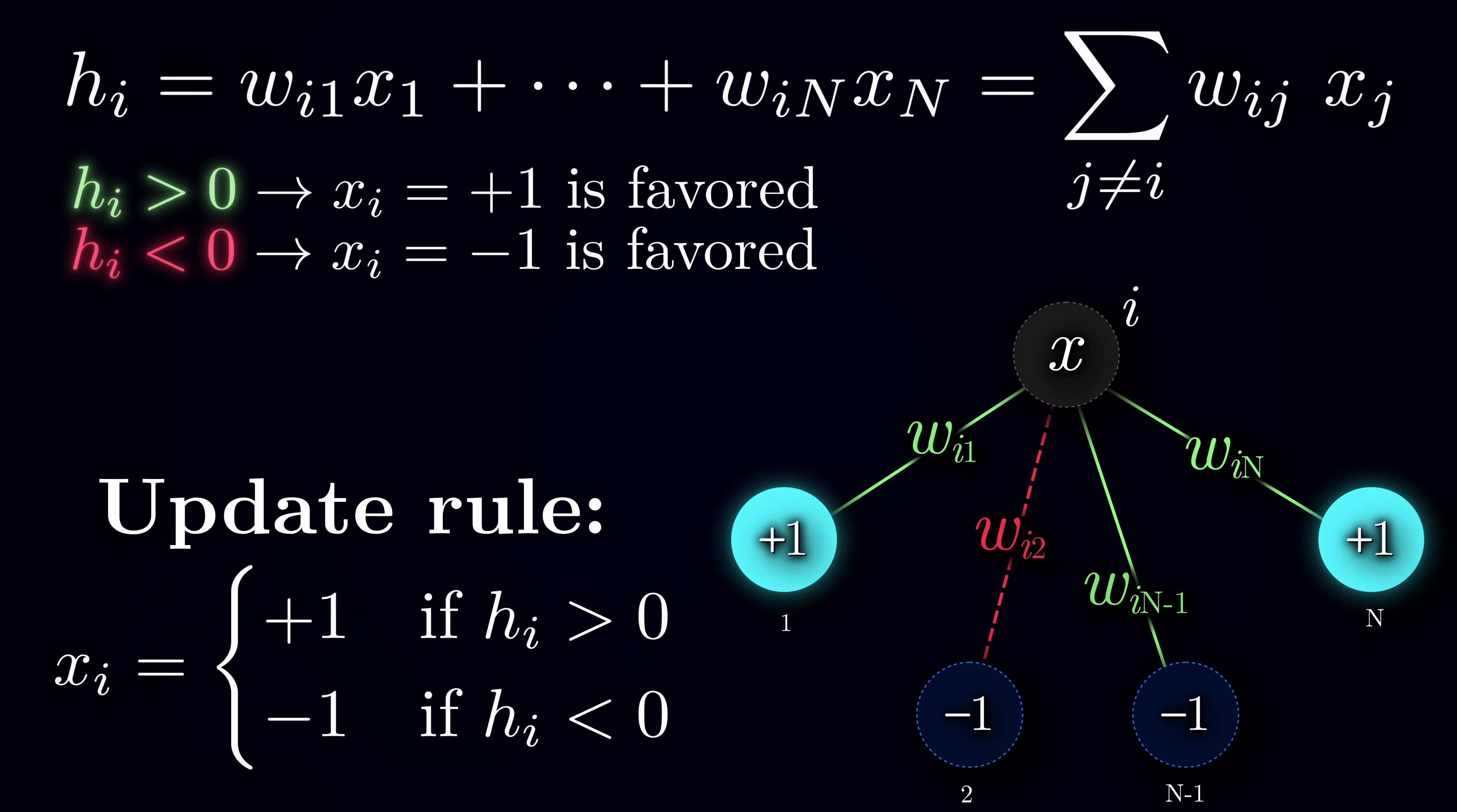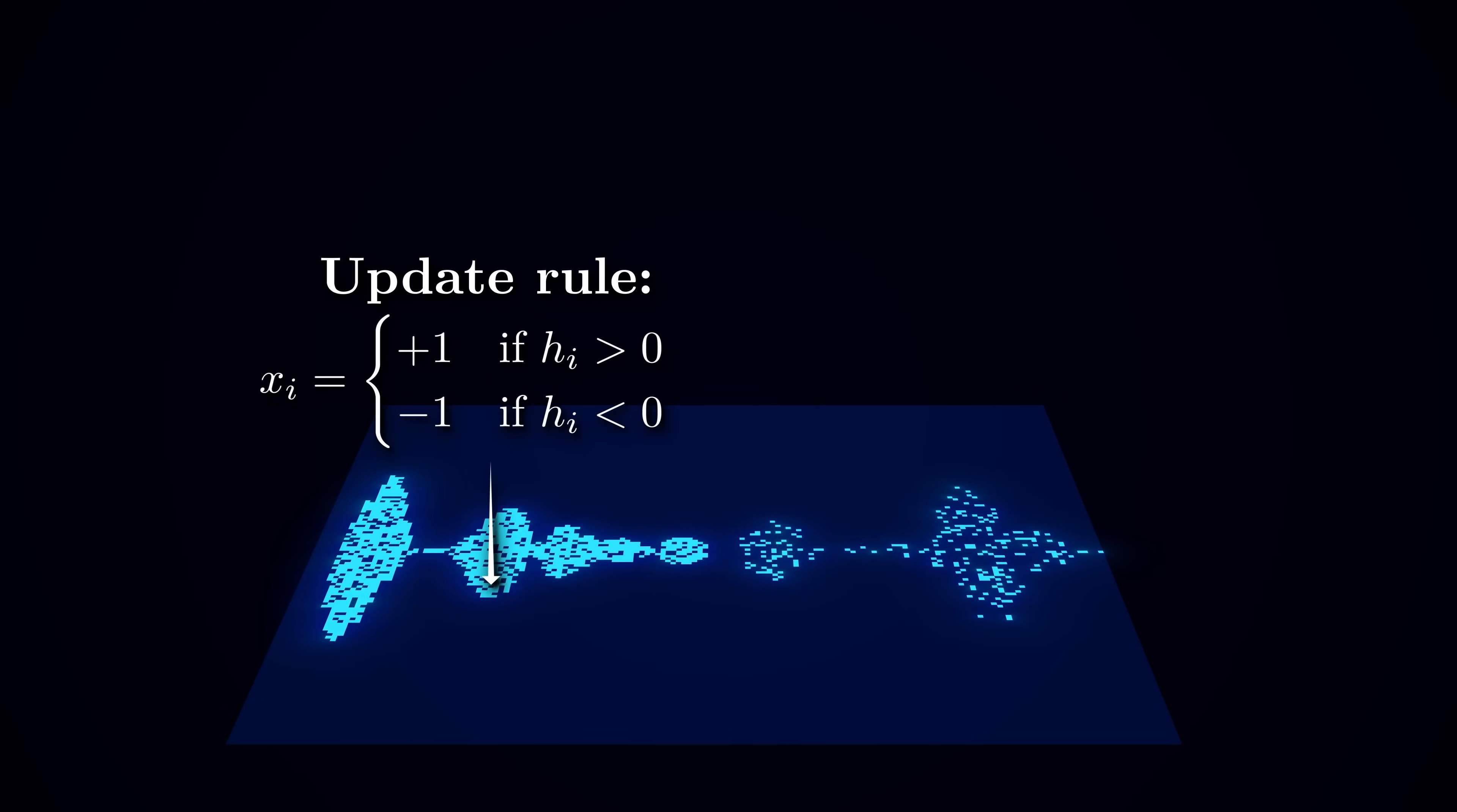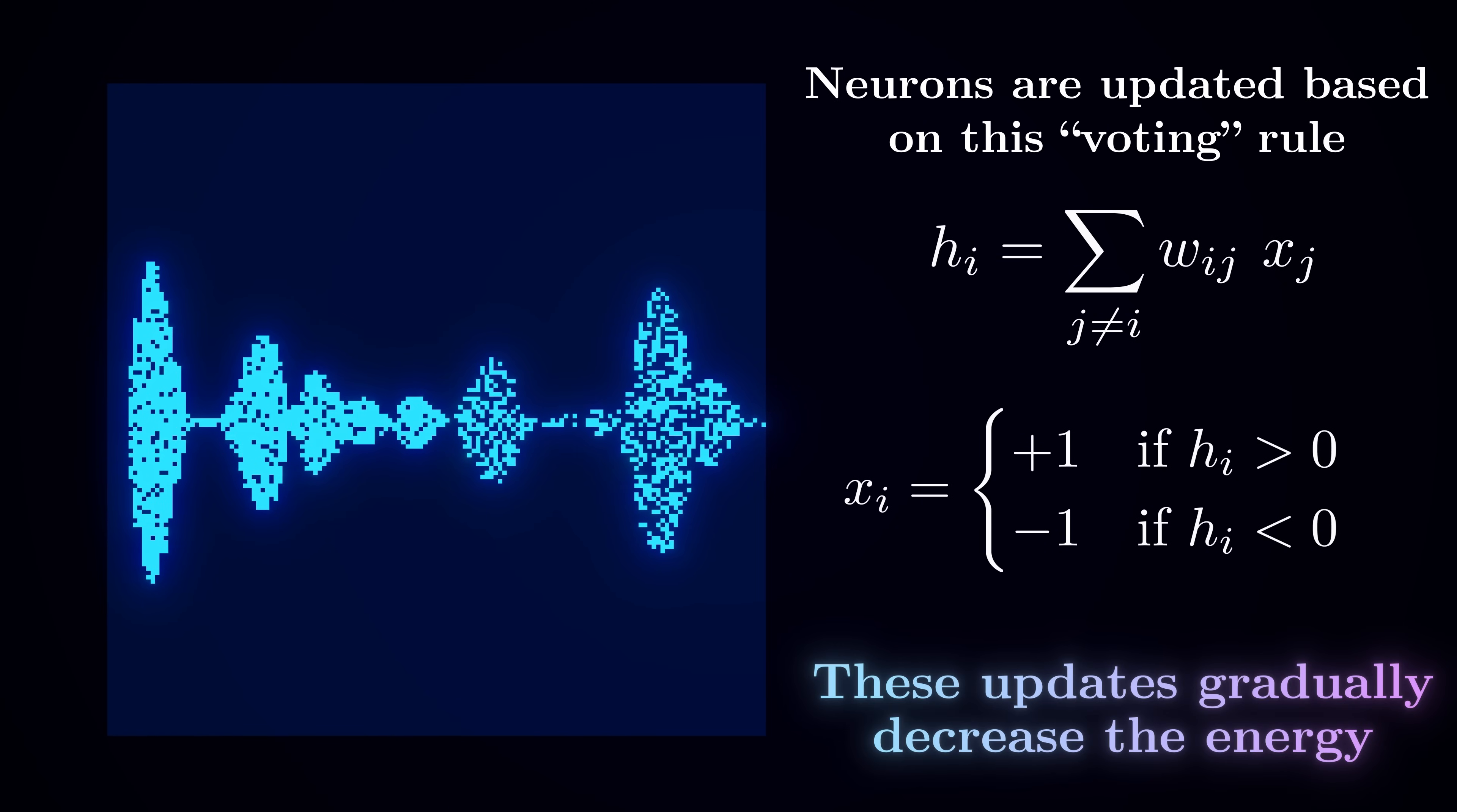You can think of this as a kind of voting process. Each neuron looks at the states of all other neurons, weighted by the strength of their connections, and decides whether to be active or silent based on the majority vote. We'll go through this process for each neuron in the network one by one, chosen in random order, updating their states based on the input from all other neurons. Once we've updated all neurons, we will have completed one iteration of the network inference and decreased the system's energy by a little bit.